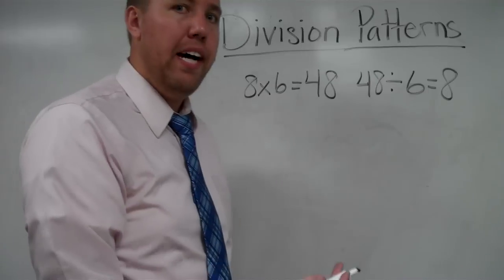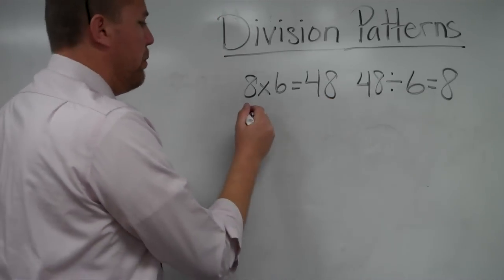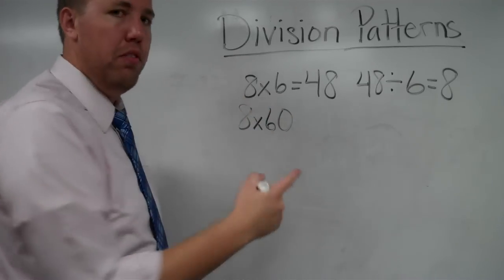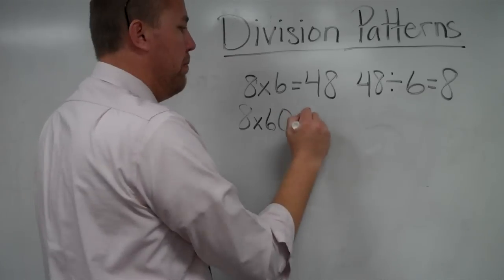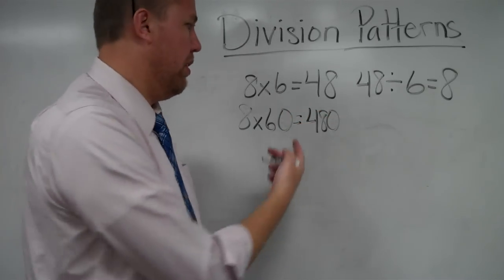We just want to talk about some of the patterns that will come by with multiplication. When we learned multiplication, we knew that if we added a 0 to the end of one of our digits in the problem, then we could just add a 0 to the end of the answer or to the end of the product.